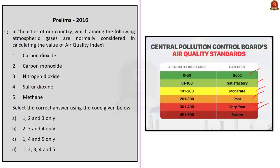Coming back to the question, this is a beautiful example for the elimination method. Air Quality Index does not measure carbon dioxide — that is the key exception. Statement one gives carbon dioxide, so we can eliminate it. Eliminating statement one allows us to eliminate options A, C, and D, since all contain statement one. The final remaining option is B — carbon monoxide, nitrogen dioxide, and sulfur dioxide only.